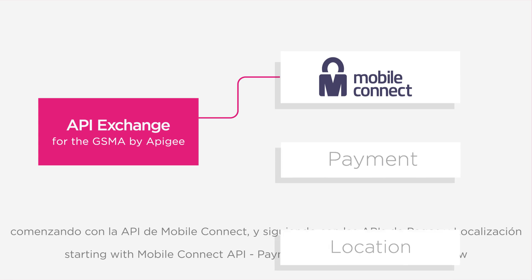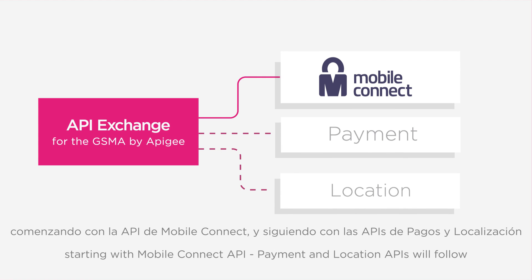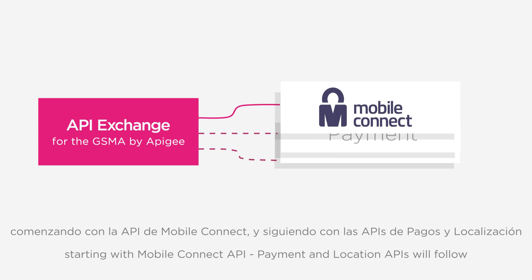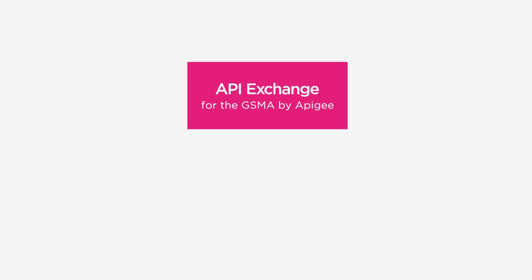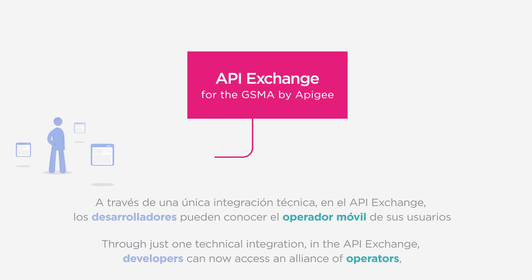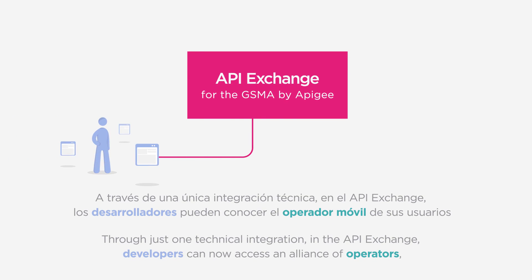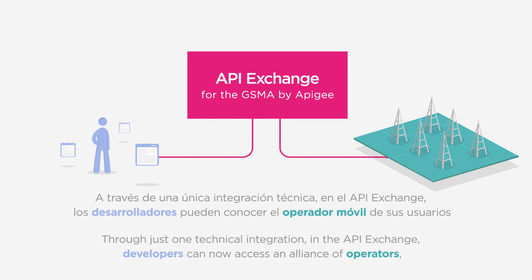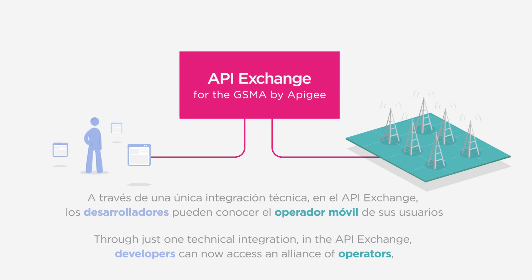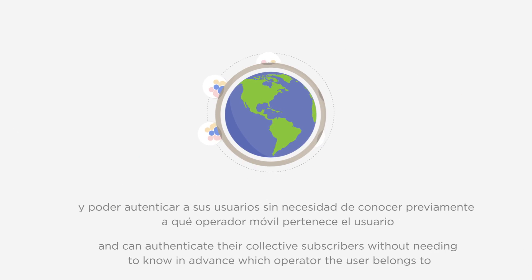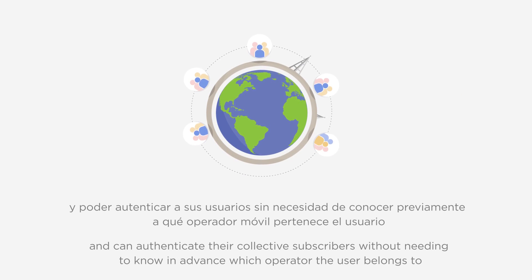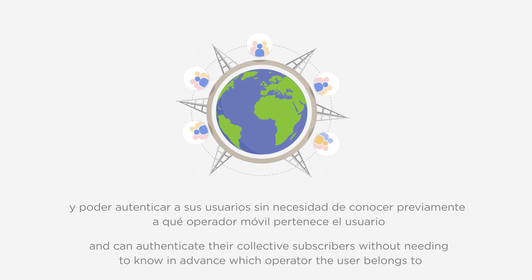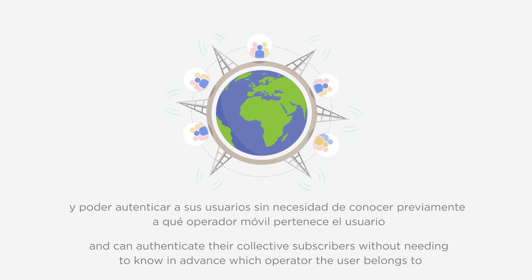Payment and location APIs, or a mash-up of these, will follow. Through just one technical integration in the API Exchange, developers can now access an alliance of operators and can authenticate their collective subscribers without needing to know in advance which operator the user belongs to.